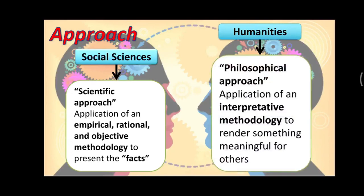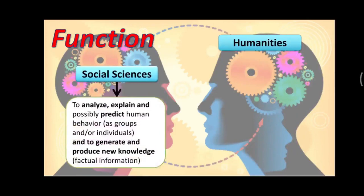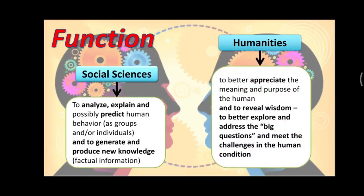However, in humanities, it utilizes a philosophical approach — it is the application of an interpretative methodology to render something meaningful for others. When we say interpretative, it is based on personal level. In terms of function, social sciences tries to analyze, explain, and possibly predict human behavior, and to generate and produce new knowledge, or what we call factual information — made possible with the use of scientific method. However, in humanities, it is used to better appreciate the meaning and purpose of human, and to reveal wisdom, to better explore and address the big questions, and meet the challenges in the human condition.